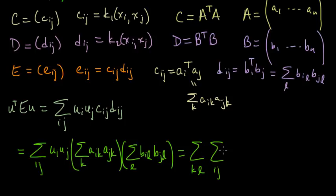So let's switch these sums. We can, none of this depends on L and none of this depends on K. So we can just pull them all out like this. U_i U_j, A_ik, A_jk, B_il, B_jl. Okay.